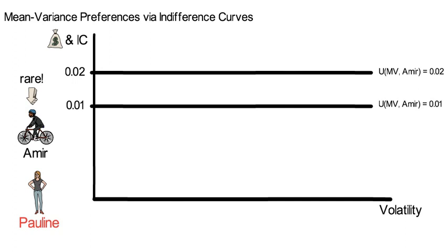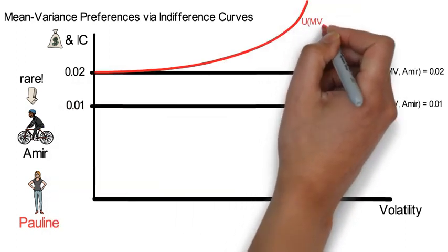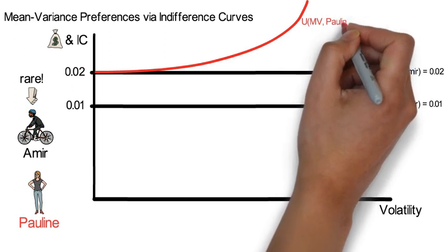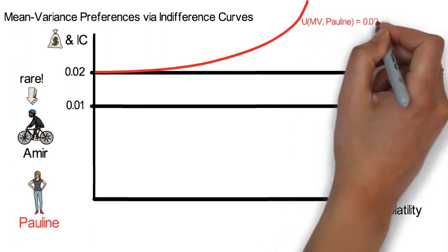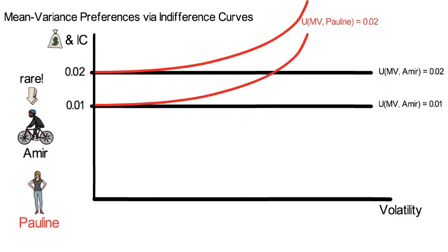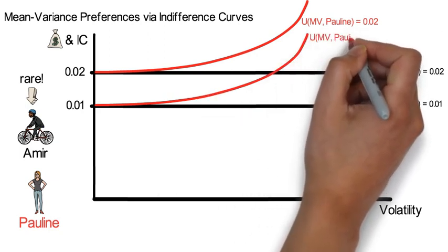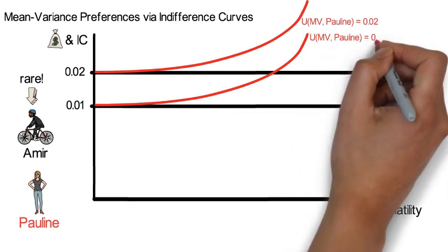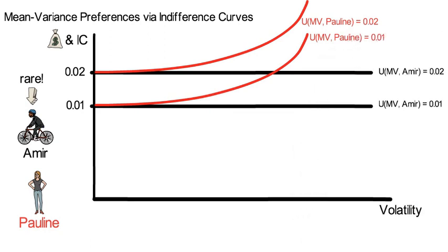Pauline has a modest risk aversion of 2. Her indifference curves are upward sloping, whereas Amir's indifference curves were horizontal. This says that Pauline is only willing to accept higher volatility of her wealth distribution if the level of expected future wealth increases sufficiently strongly.